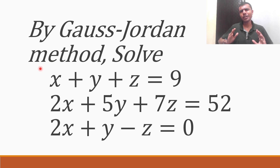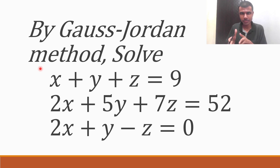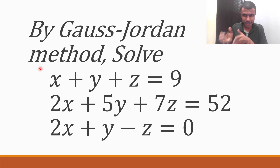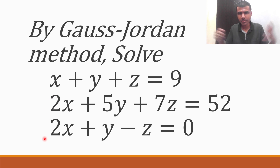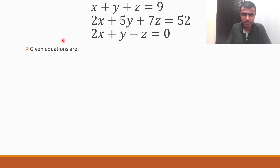I know some of you feel like Gauss-Jordan method is a little tough, but don't worry guys. If you understand the things in the way they need to be understood, you will feel it a little easy. So this is the given system of equations. Understand the logic — if you understand the logic now, you will be able to do this sum on your own also. Let's get started.